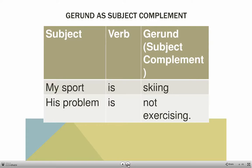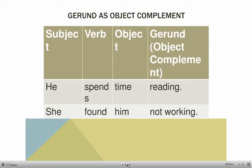A gerund can also be the complement of a verb. Remember, when the verb is a linking verb like 'is' or 'are,' we talk about a complement and not an object. For example: 'My sport is skiing,' 'His problem is not exercising.' Notice how the negative is placed before the gerund.